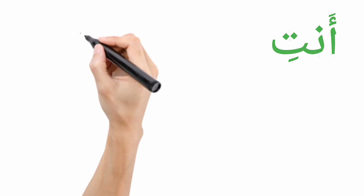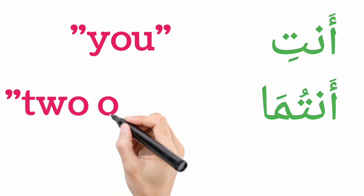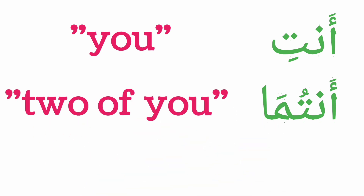For the feminine, we have anti. When you are talking to a female that is in front of you, you use anti. And when they are up to two in number, you use antuma, which still means 'you.' It is the dual aspect of anti.